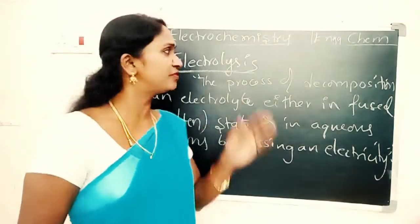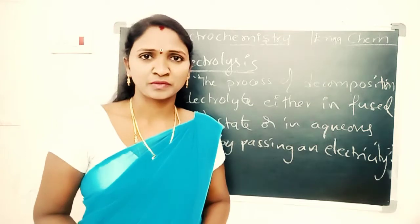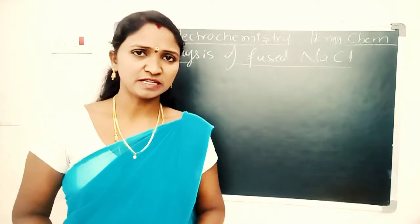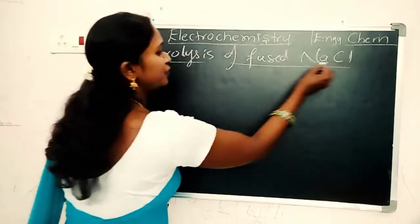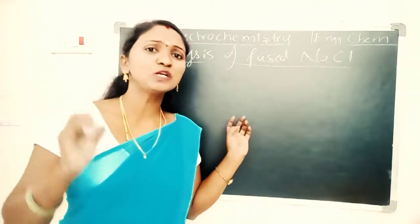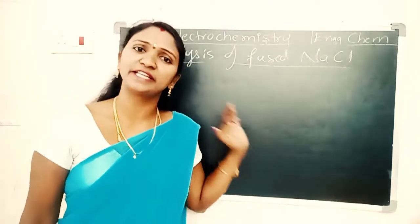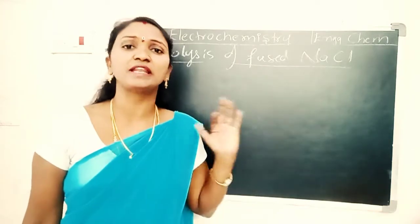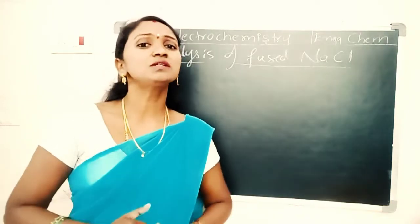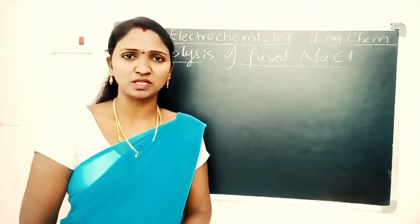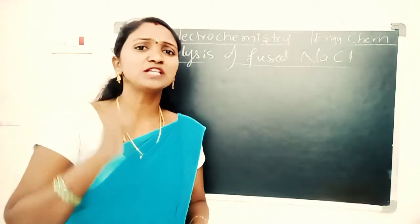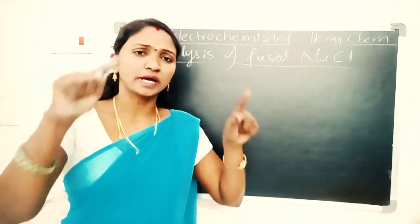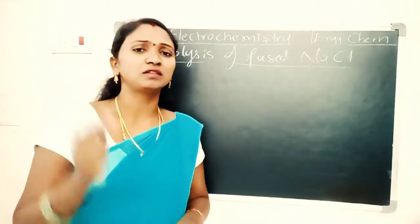Let us take an example for electrolysis. We will take the electrolysis of fused NaCl. Electrolysis always takes place in an electrolytic cell, and it requires one electrolyte and two electrodes.